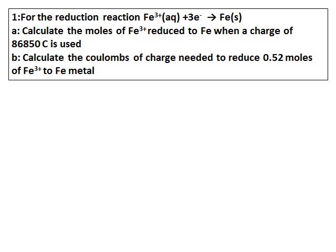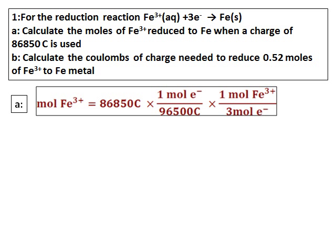For the reduction reaction Fe³⁺ + 3e⁻ → Fe, Part A asks us to calculate the moles of Fe³⁺ reduced to Fe when a charge of 86850 coulombs is used. Using Faraday's equation, we start with 86850 coulombs, multiply by 1 mole of electrons per 96500 coulombs to get moles of electrons. Then from the equation, for every 3 moles of electrons, 1 mole of Fe is formed.